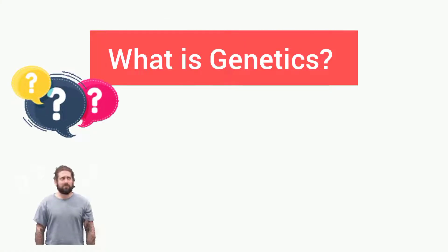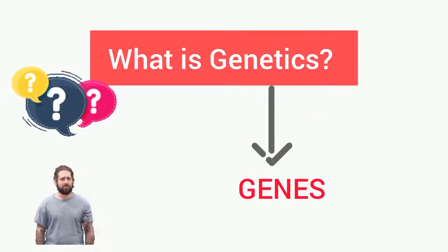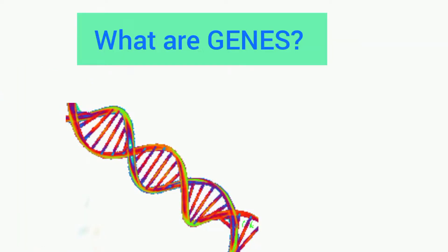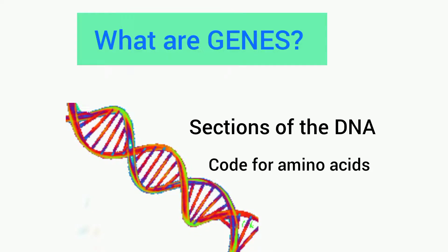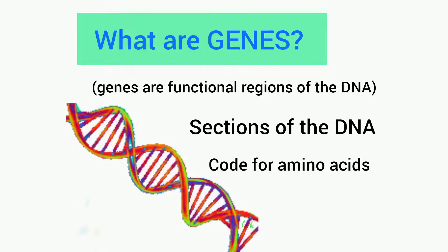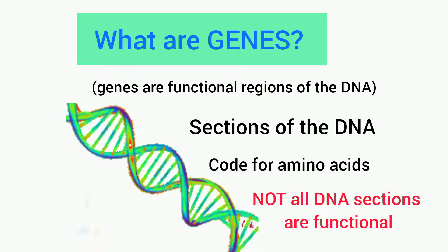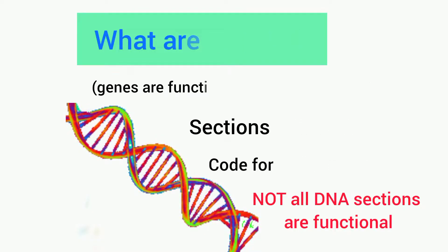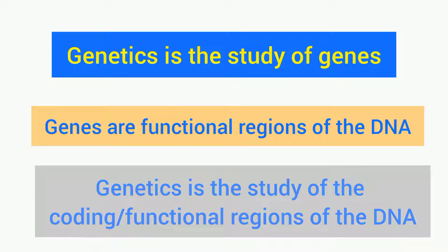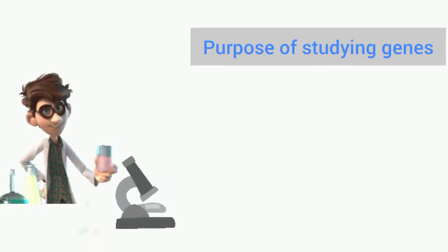What is genetics? The key word is genes, so genetics can be defined as the study of genes. Genes are sections of DNA that code for amino acids — they are the functional regions of DNA. Not all parts of DNA are functional; only the functional ones are called genes. So genetics is the study of the coding or functional regions of the DNA.